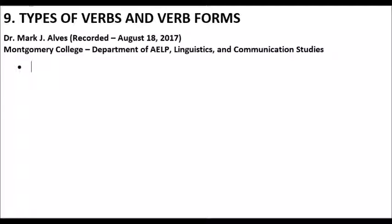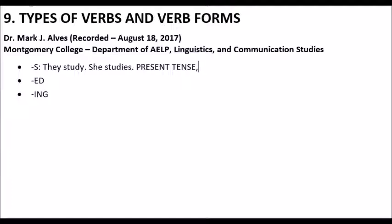So let's first recall those basic inflectional suffixes on verbs: the S, ED, and ING forms. For S: they study, but she studies. That is a present tense verb, but in this case the subject is singular — she — so we'll call this the singular present tense verb form.